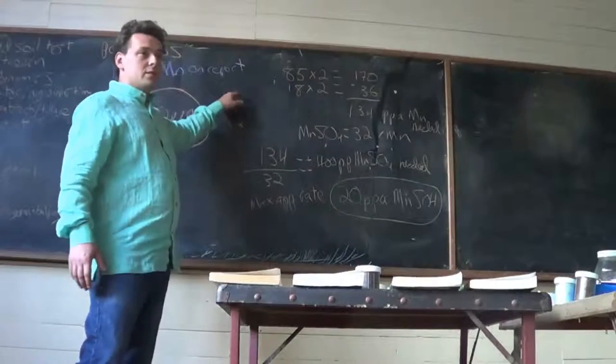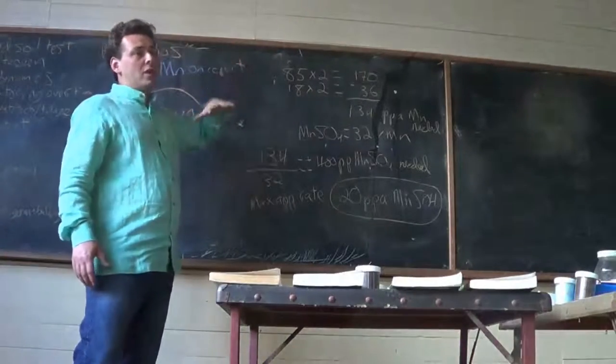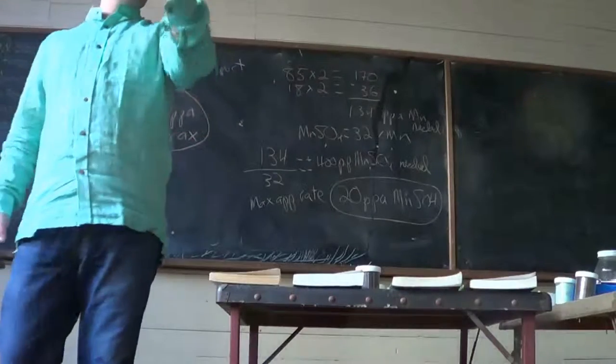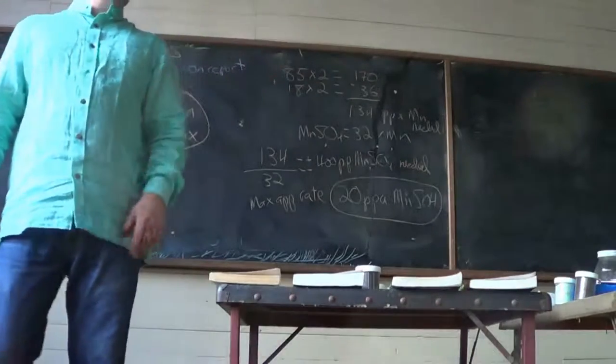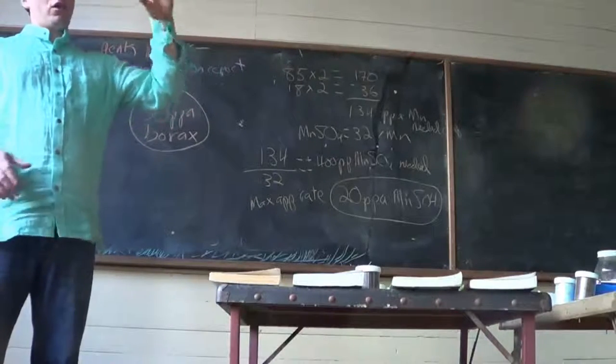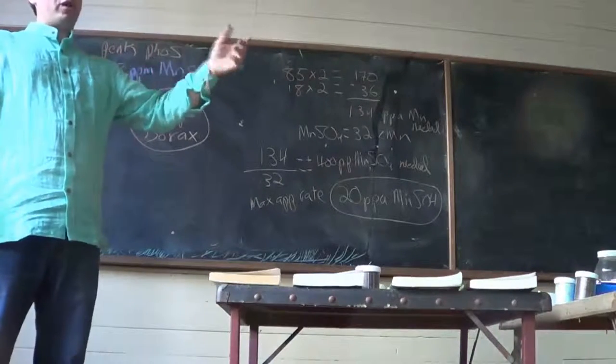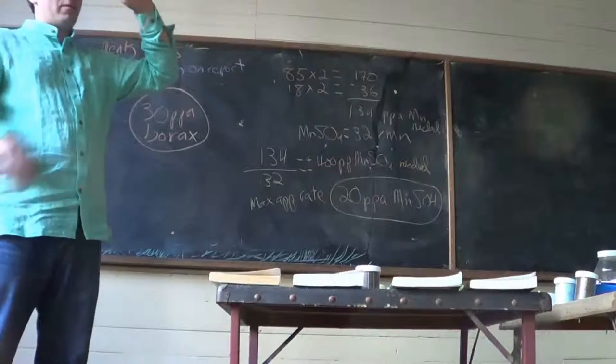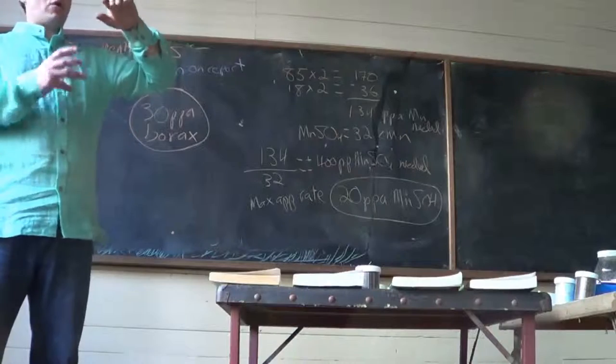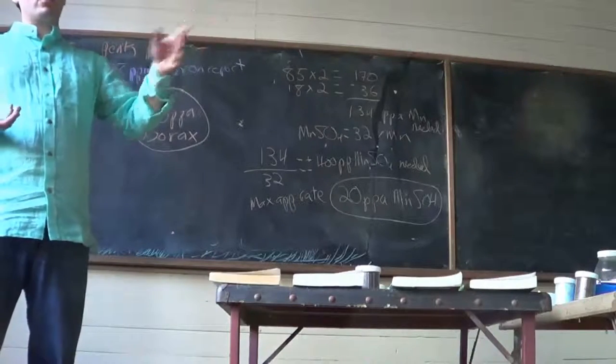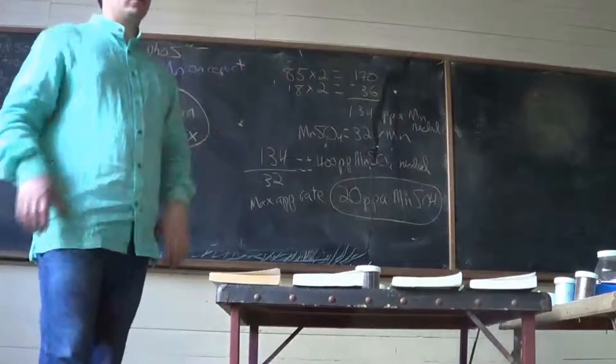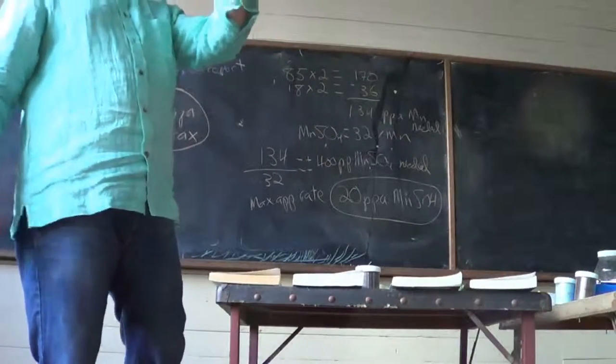The base saturation percent is basically what I said. You have a certain number of bonding sites. So what percentage of them are calcium? What percentage of them are potassium? What percentage of them are magnesium? So that's reporting what percent you have. And then you've got Albrecht. But basically what Albrecht figured out was that certain percentage ranges, like about 68% of calcium seems to be really good. About 12% of magnesium seems to be really good. About 3% or 4% of potassium seems to be really good.